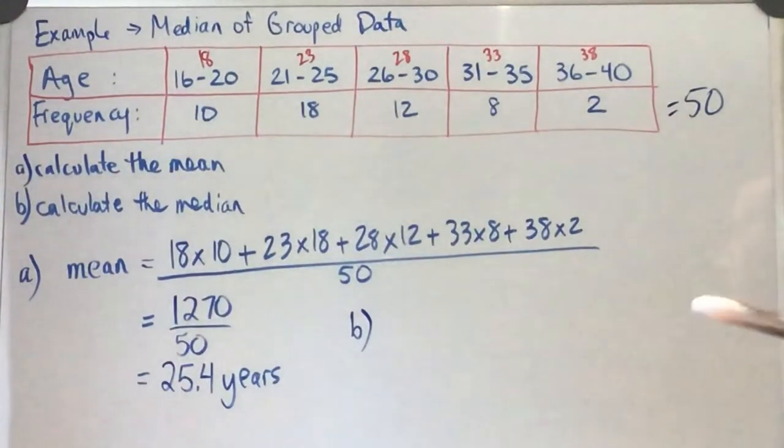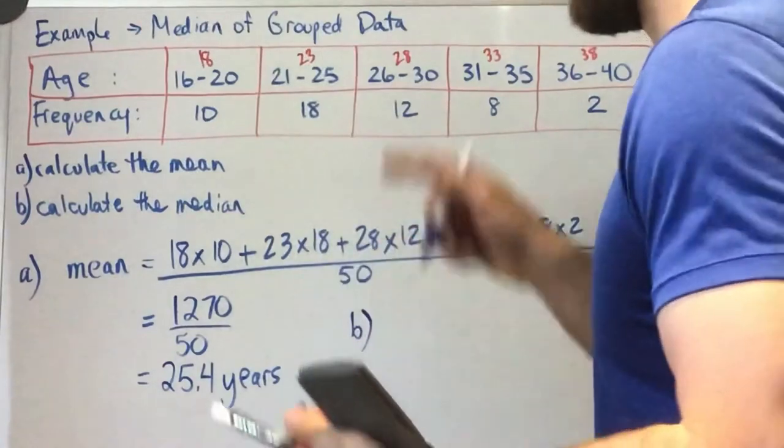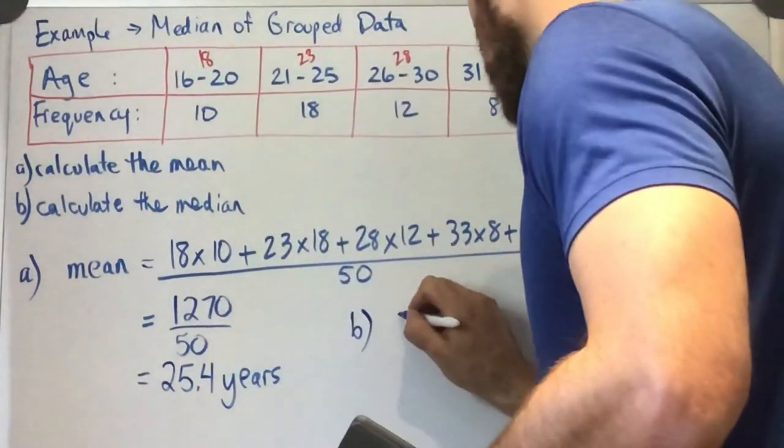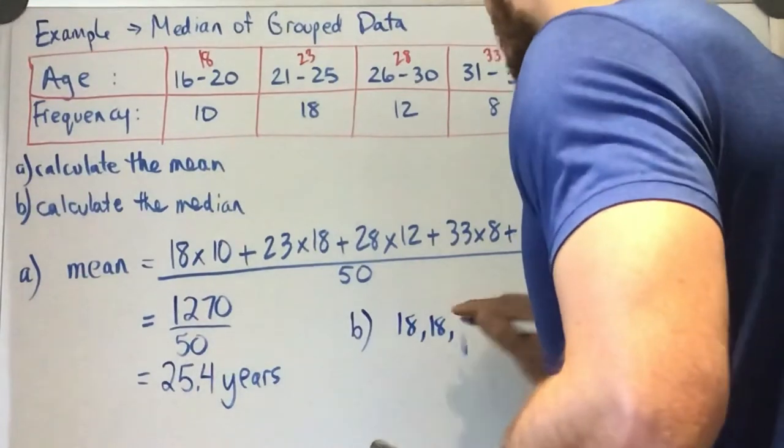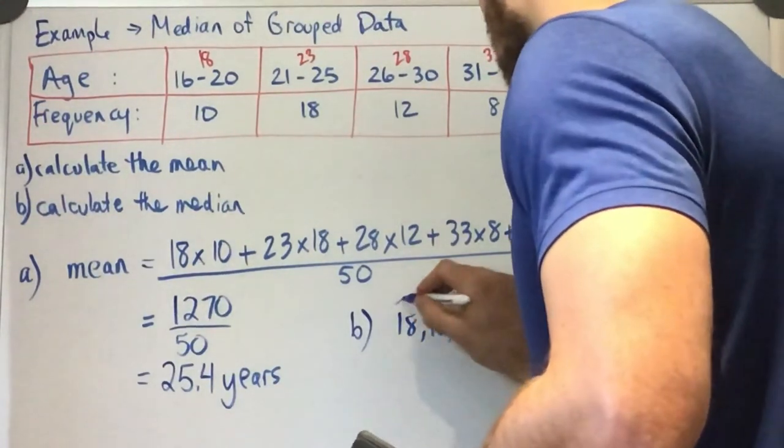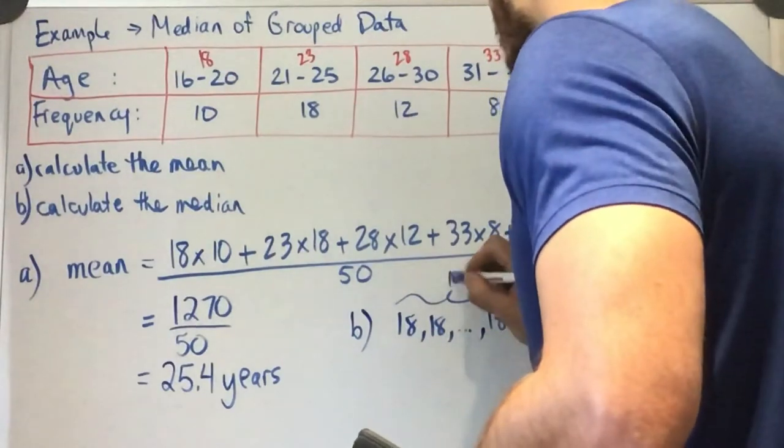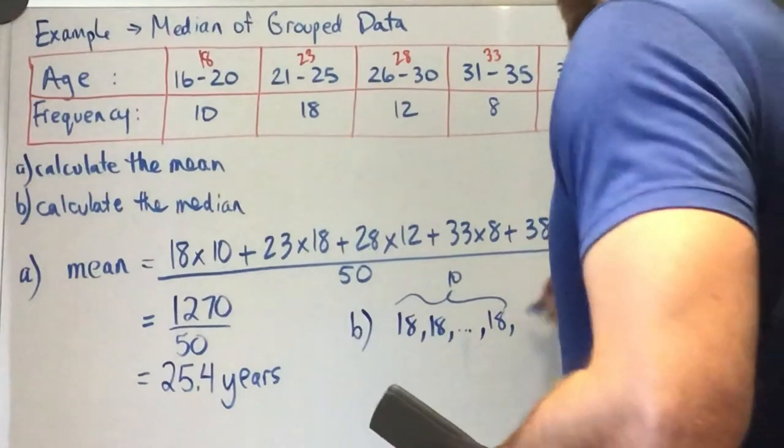So if we have 18—or sorry, 10 eighteens, I'm not going to write all of them out. Then we're going to have 23—or sorry, 18 twenty-threes.